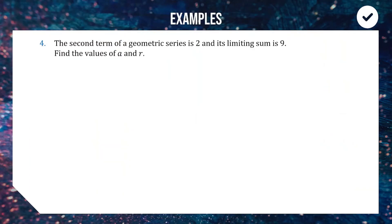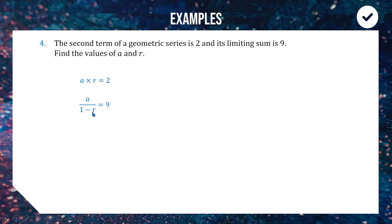A more challenging example: the second term of a geometric series is two and the limiting sum is nine — find the values of a and r. The second term equals the first term times r, so ar = 2. The limiting sum gives us a/(1 − r) = 9. We now solve these two equations simultaneously — which is why this is a challenging question, as the algebra is quite demanding.